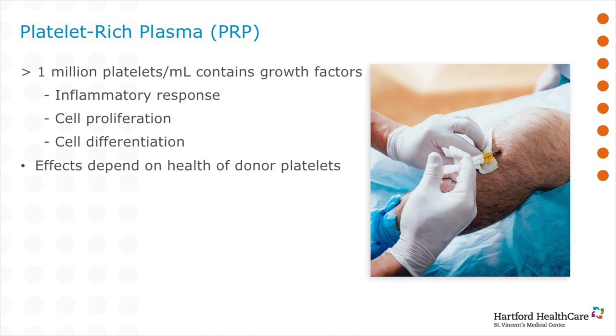Platelet-rich plasma offers some of the advantages of stem cells without donor site pain or concerns for reaction to donor tissue. It is obtained by drawing whole blood, separating it into its components, and injecting the layer containing platelets into the affected joint. Platelet cells are not stem cells, but they do have regenerative potential and can release proteins and growth factors that decrease inflammation and promote cartilage restoration. Keep in mind that the effects of platelet-rich plasma are closely tied to the health of your own platelet cells. Unfortunately, despite their promise, orthobiologics are costly and lack high-quality evidence, so insurance companies rarely pay for them — they can cost up to $500 to $2,000 per treatment.